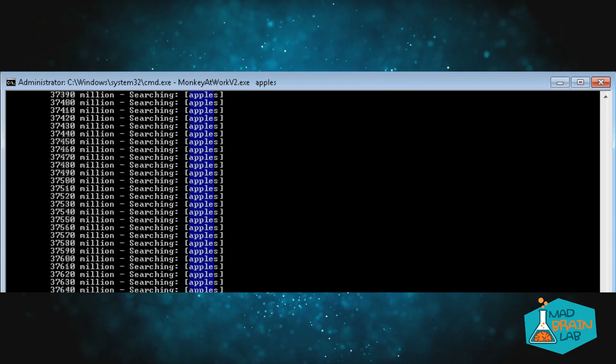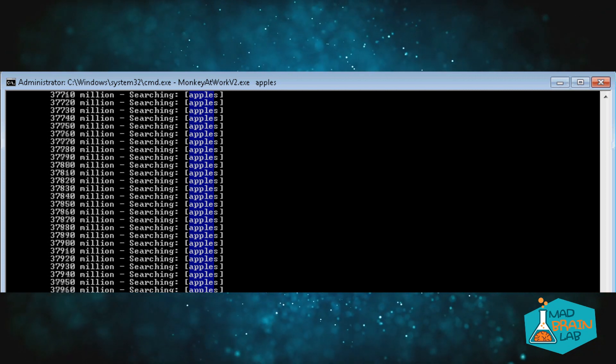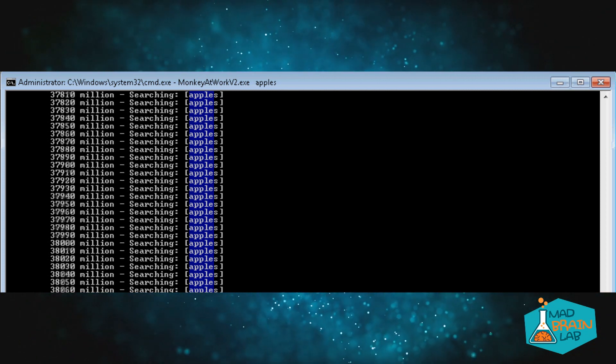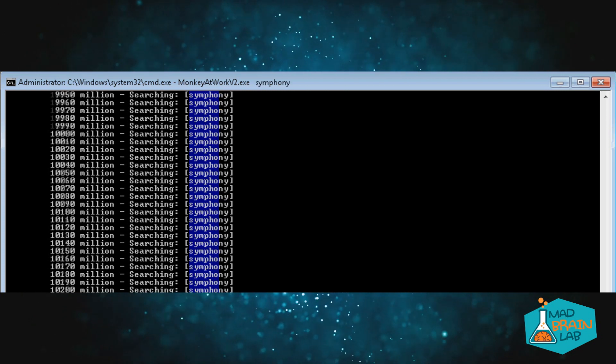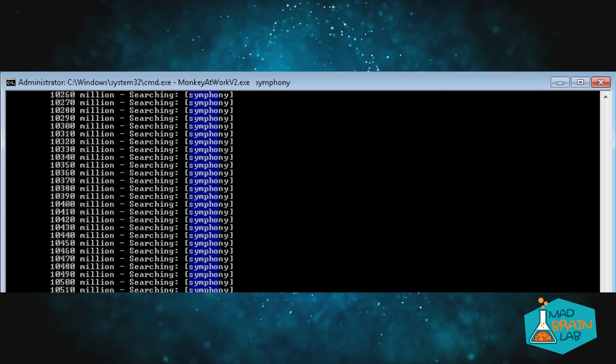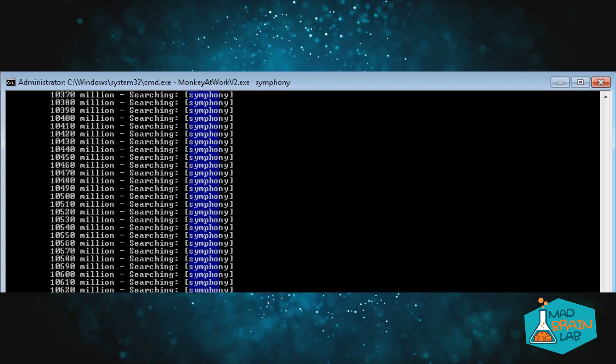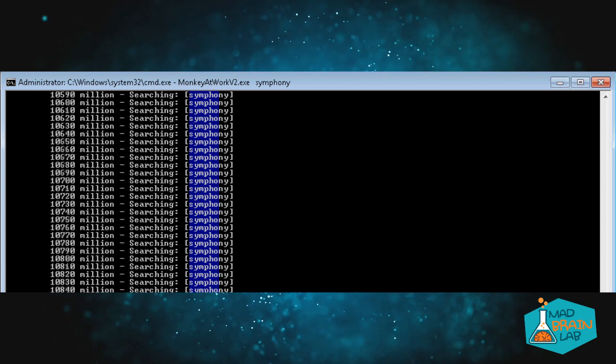Now let's try the keyword apples. This takes substantially longer. So one has to wonder if the time from apple to apples varies so substantially, imagine the complete works of Shakespeare. Every space and every character. I ran the search for symphony for a day and got the monkeys to type the word symphon but I never got the why. One can see how it gets exponentially more complex and time consuming for the monkeys the longer the word becomes.